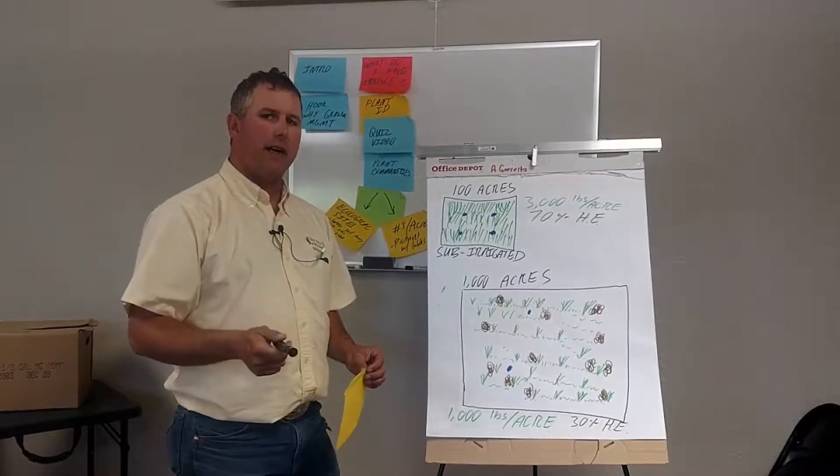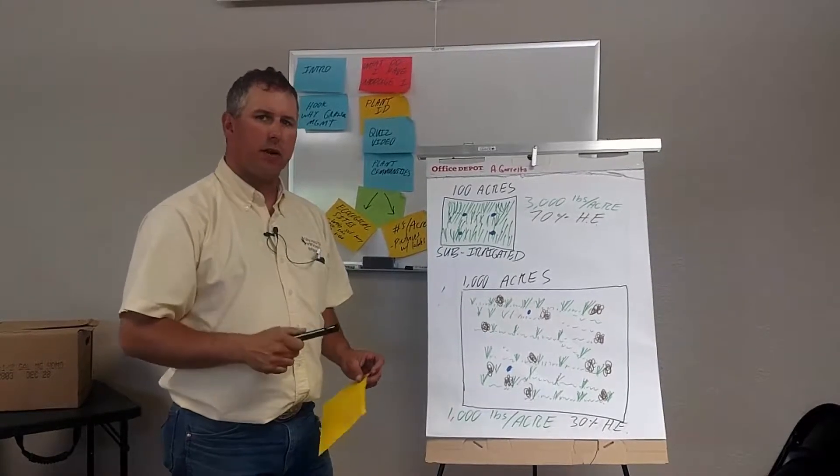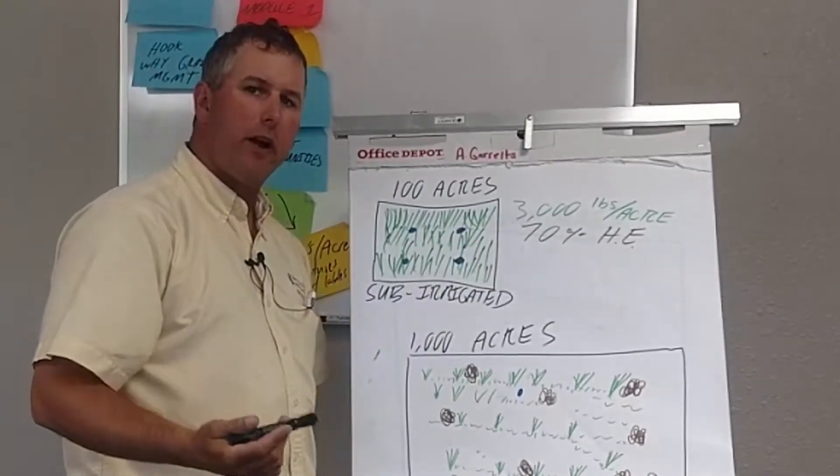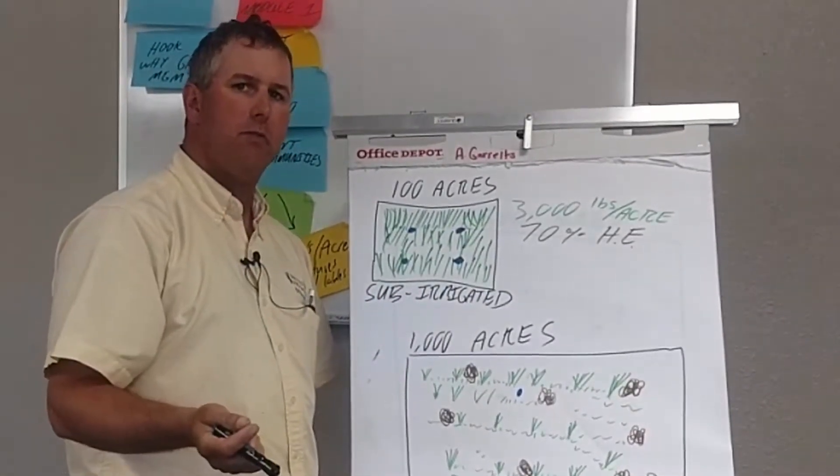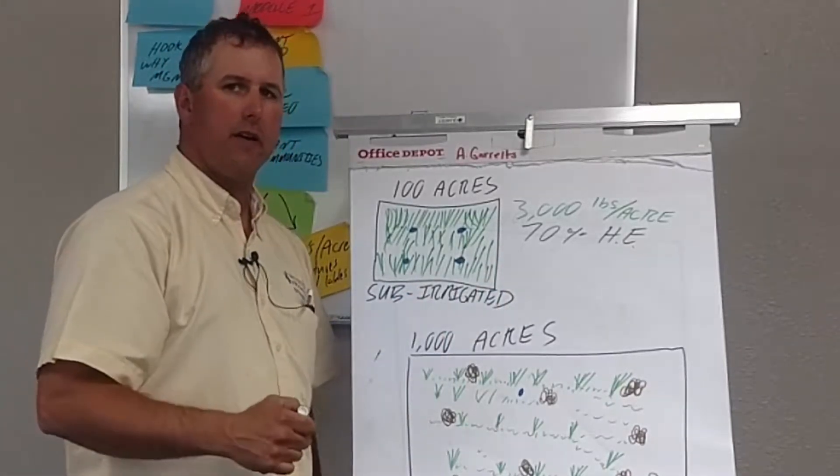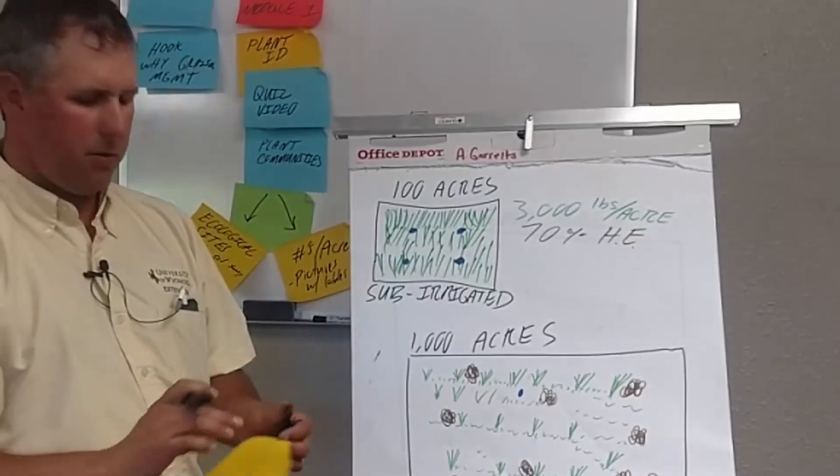Let's calculate stocking rate or carrying capacity for each one of these pastures. We had 3,000 pounds per acre as the total annual forage production of this pasture. We said we were going to put 70% of that in the belly of our grazing animals. Let's do the math.